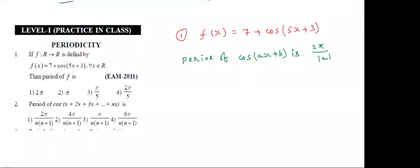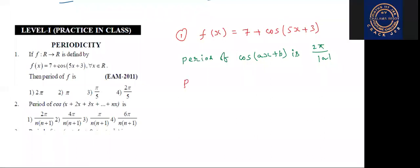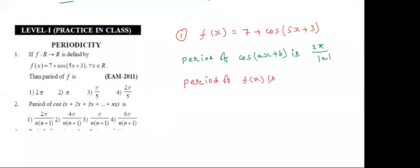Observe students — whatever is the coefficient of x, that value goes in the denominator. So the period of F(x) is 2π by mod A, and the A value here is 5. So the final answer is 2π by 5.